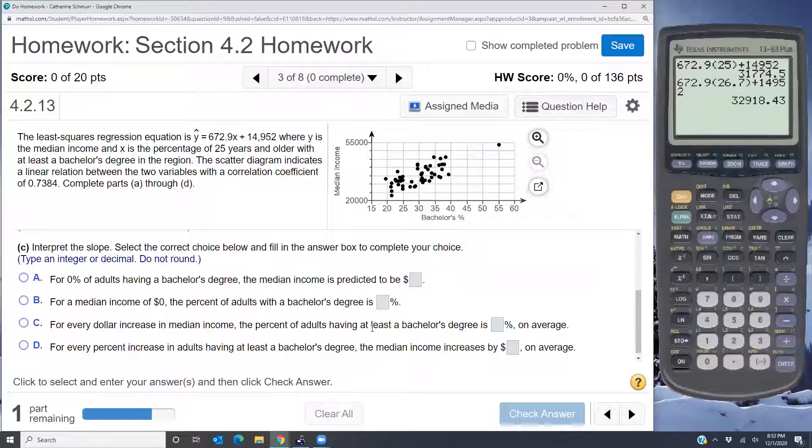Okay, now part C says interpret the slope, and we know that the slope is the number that's attached to the x. So our slope in this case is 672.9. Now slope is always the change in y for every change in x. So every time x goes up by 1, y is going to go up by 672.9.